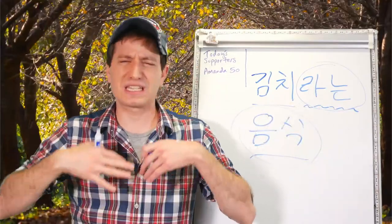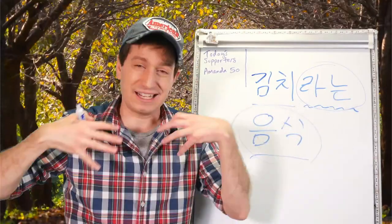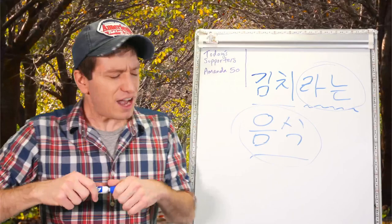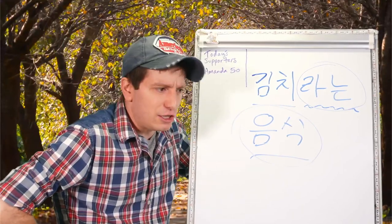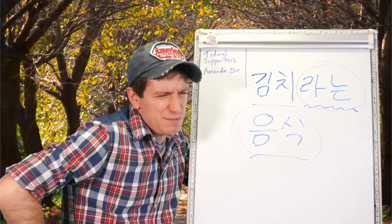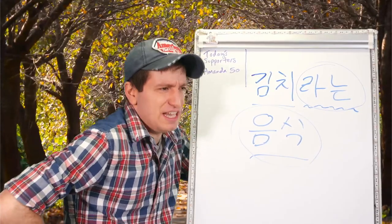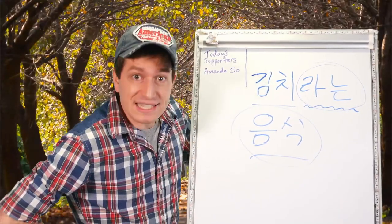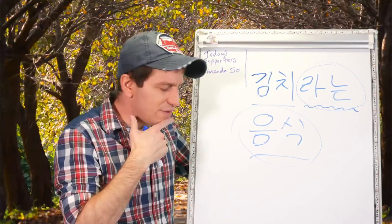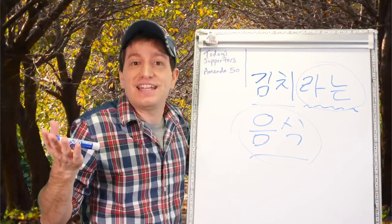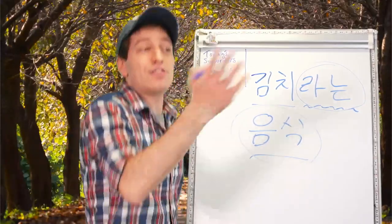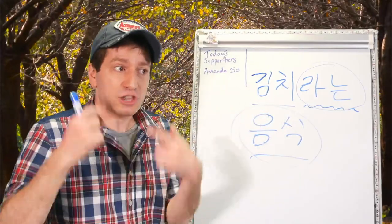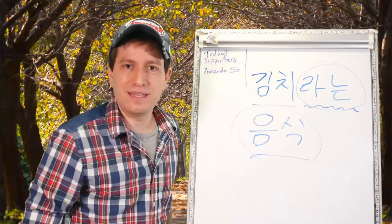This form is used when you are trying to explain or clarify something that you think the listener might not know about. You wouldn't say 'it's kind of an indie movie known as Star Wars' — you'd just say 'do you know Star Wars?' But you could say 'have you ever seen that movie called American Graffiti?' — most people wouldn't know George Lucas's earlier movies. You would never say 김치라는 음식 unless you thought the listener doesn't know what it is.